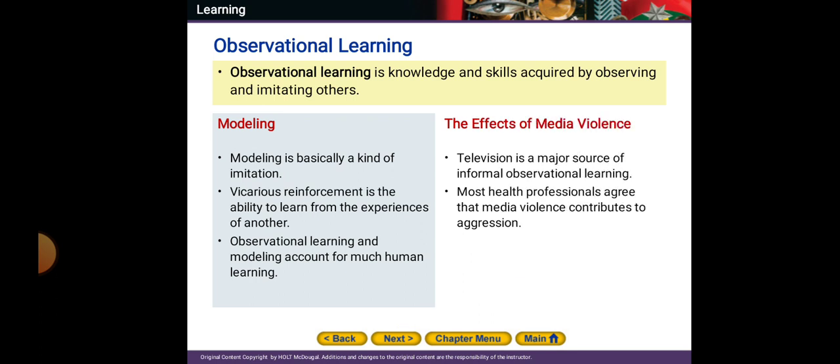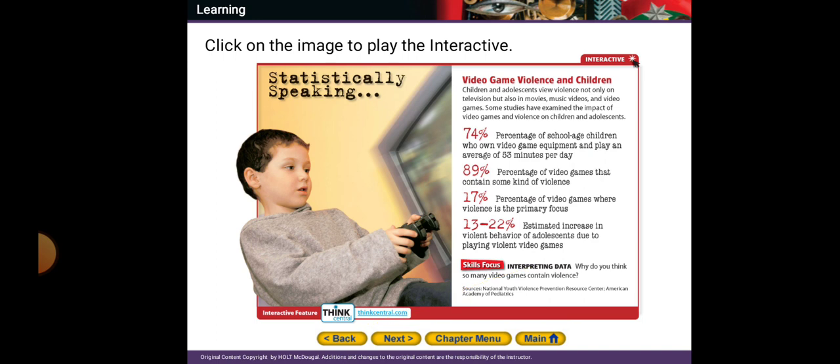What about the effects of media? Television is a major source of informal observational learning. Most health professionals agree that media violence contributes to aggression. If your TV series or movies in society all talk about violence and aggression, this leads to violence in the real society and in real dealings with people.